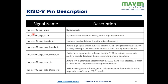The pin description table begins with the clock input — the system clock to which all sub-blocks of the RISC-V top module are synchronized. The reset input is the system power-on reset, active-high asynchronous. This reset signal resets internal registers including the program counter and the 32 general-purpose registers in the integer file.